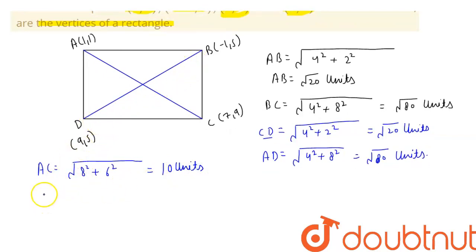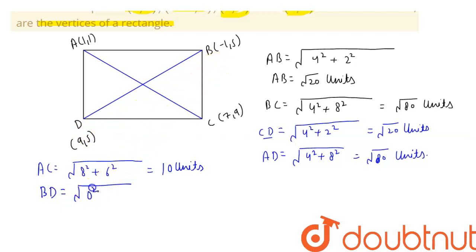Now we calculate the length of diagonal BD. BD equals the square root of (5 minus 5) squared plus (9 minus (-1)) squared, which is the square root of 0 squared plus 10 squared, giving us the square root of 100, which again equals 10 units.